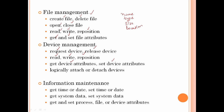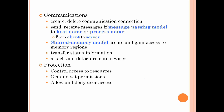Next category is information maintenance. This covers system-related data. First, get time or date, and set time or date. Also get RAM and other system-oriented data. Information maintenance covers all processes, file, device attributes and all additional information together.